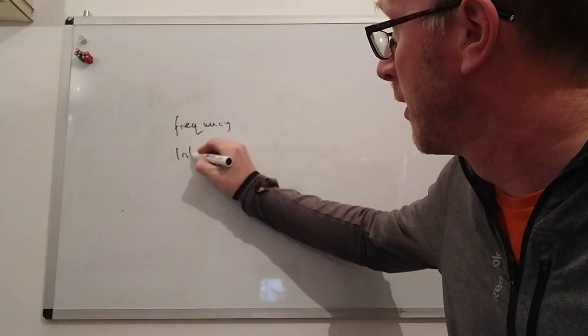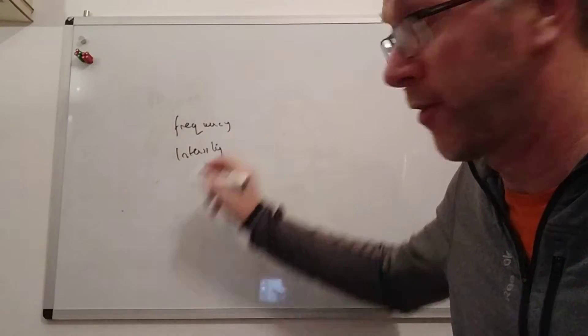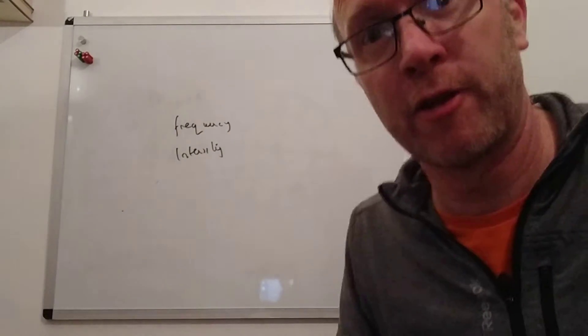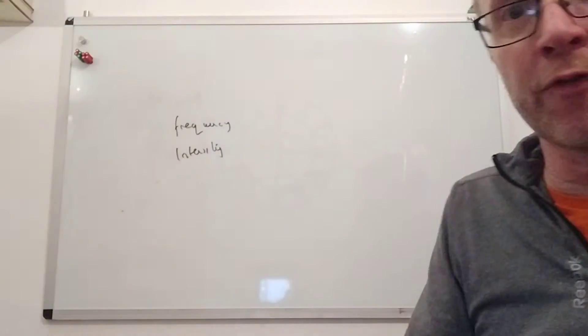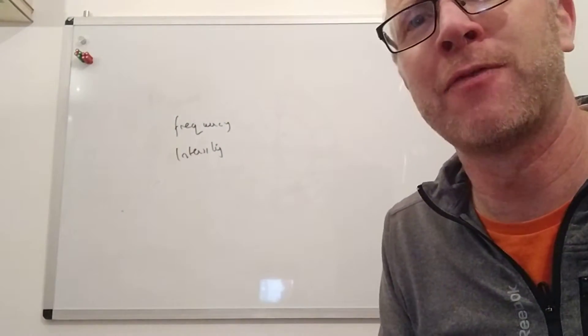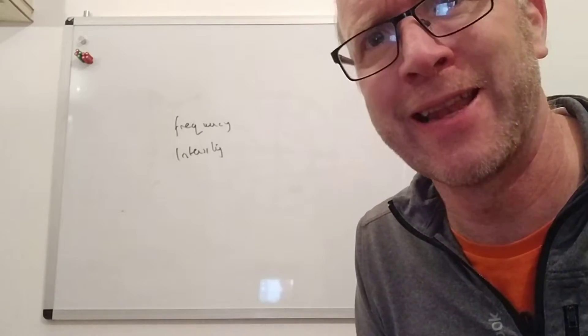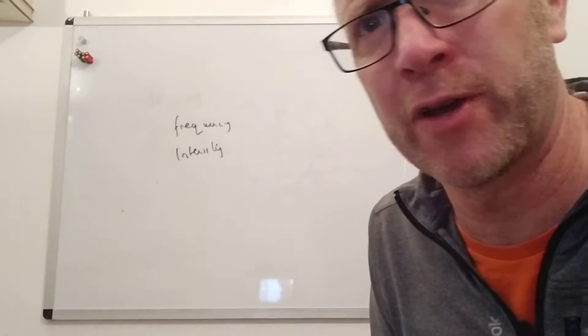Intensity of light — when we're talking about photons, it's just how many photons there are. If there are loads of photons, it's very intense light. If there are fewer photons, it's less intense light.